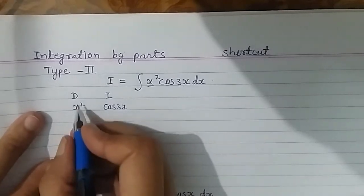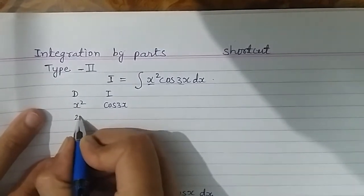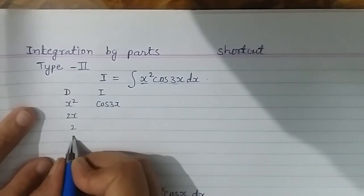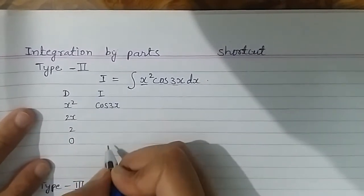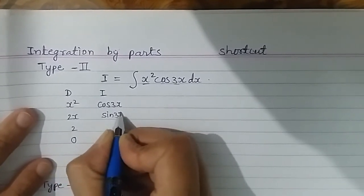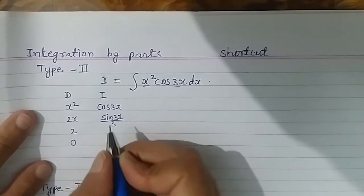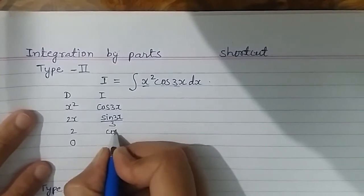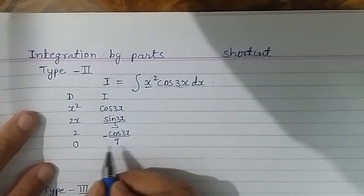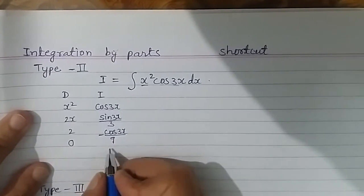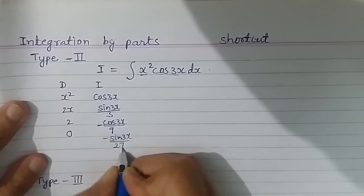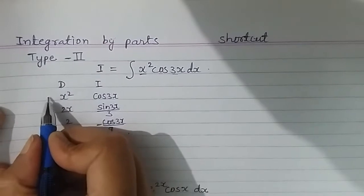I keep differentiating the D-column until I reach 0: differentiation of x² is 2x, of 2x is 2, and of 2 is 0. On the I-column I keep integrating: integral of cos 3x is sin 3x / 3, integral of that is −cos 3x / 9, and integrating again gives −sin 3x / 27.